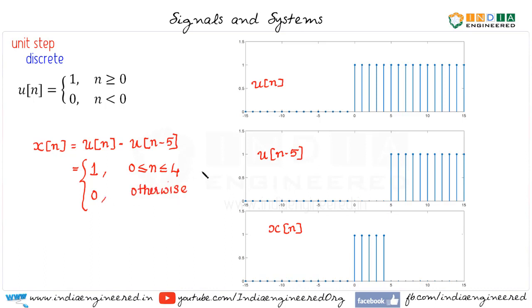This is the sharp difference from its continuous time counterpart. Remember its value is 0 at n equal to 5. In the coming videos we will see continuous time and discrete time impulse function.